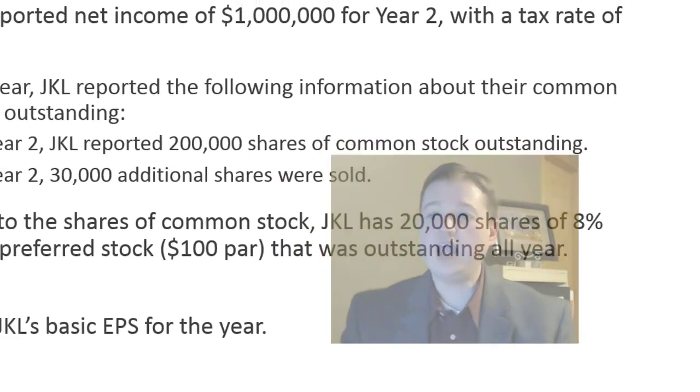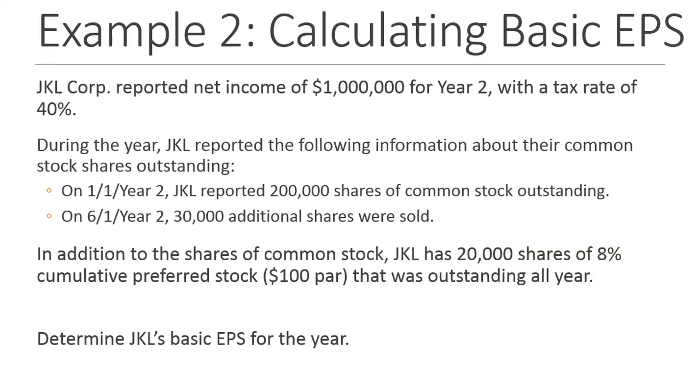We're going to start with JKL Corporation. JKL reported net income of a million dollars in year two with a 40% tax rate. During the year they reported two changes to their shares outstanding. They started with 200,000 shares outstanding. On June 1st, they issued an additional 30,000. In addition to those shares of common stock, they have 20,000 shares of 8% cumulative preferred stock, $100 par value, that have been outstanding all year. We want to determine what their basic earnings per share was. So let's jump right into this.